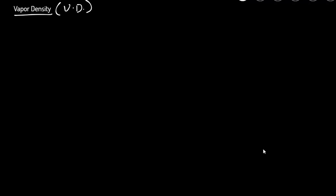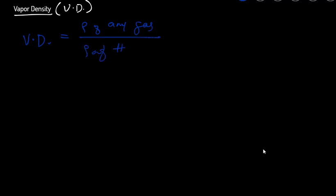Vapor density is usually represented by VD. The definition: vapor density of any gas is equal to the density of that gas over the density of hydrogen gas. So it's basically a ratio of densities.